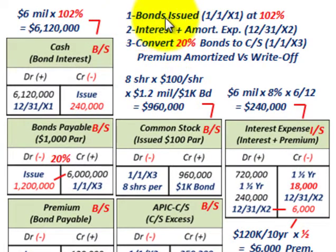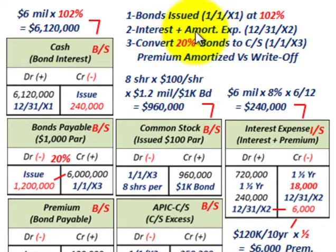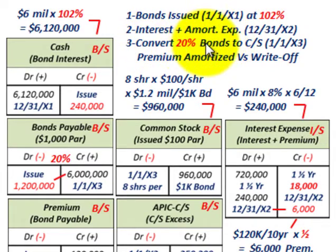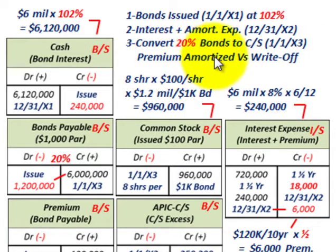We're going to look at the bonds issued on 11X1 at 102%, then the interest and amortization expense up to 12/31/X2, and then the conversion — 20% of these bonds converted into common stock on 11X3. We're going to concentrate on the premium on the bonds that's amortized versus the write-off of the bonds when we make this conversion.